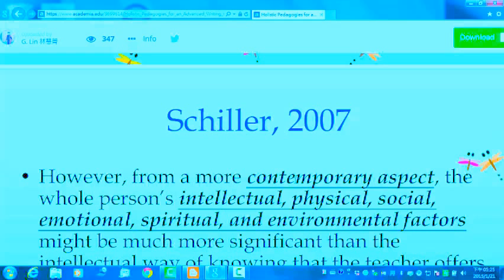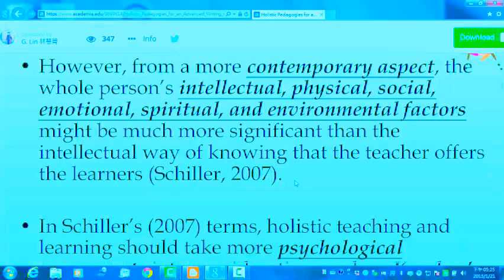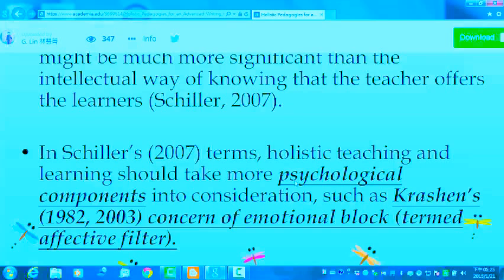According to Schiller in 2007, however, from a more contemporary aspect, the whole person's intellectual, physical, social, emotional, spiritual, and environmental factors might be much more significant than the intellectual way of knowing that the teacher offers learners. In Schiller's terms, holistic teaching and learning should take more psychological components into consideration, such as Steven Krashen's concern of emotional blocks, which is termed as the affective filter.